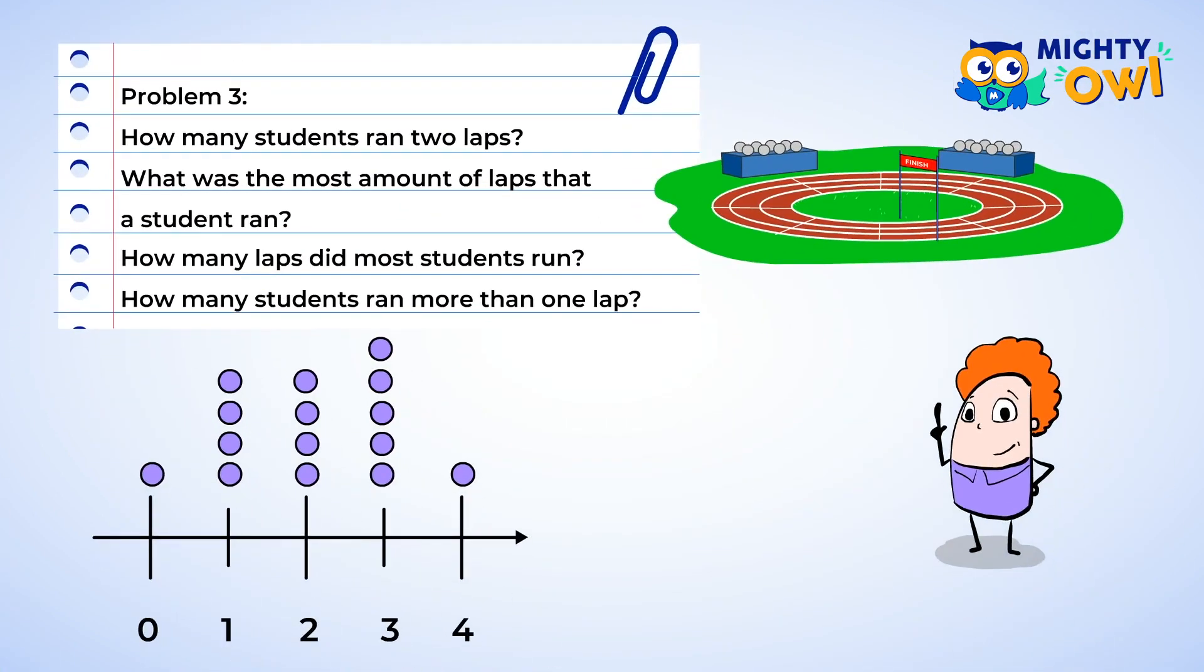Hey, look at that! This line plot is about running! Alright, let's start answering these questions. In order to find out how many students ran two laps, we need to count the number of dots above the two. So we got one, two, three, four. Four students ran two laps.